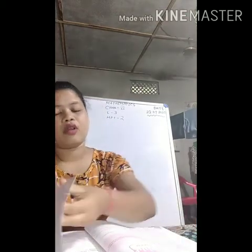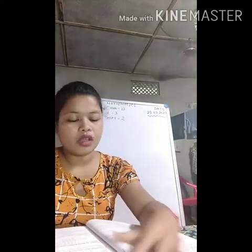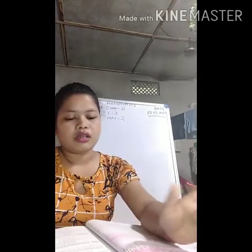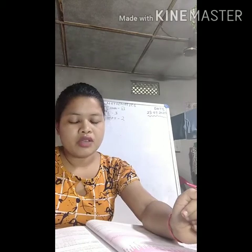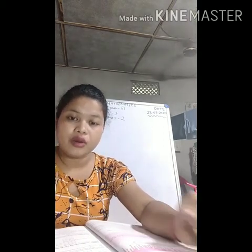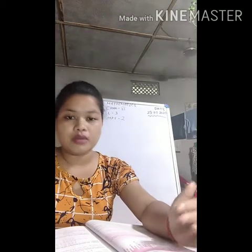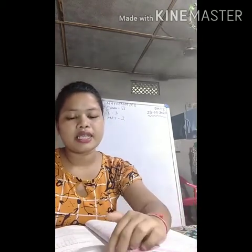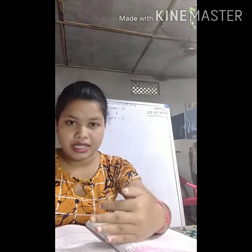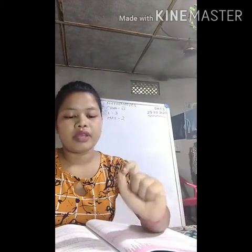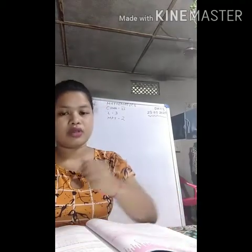For whole numbers, there are some properties for addition, subtraction, multiplication, and division. Let's see the properties of addition — there are 4 properties. The first is closure property: a whole number added to another whole number gives a whole number as the answer. The sum of any two whole numbers is always a whole number. For example, 8 plus 9 is 17 — 8 is a whole number, 9 is a whole number, and the answer 17 is also a whole number.